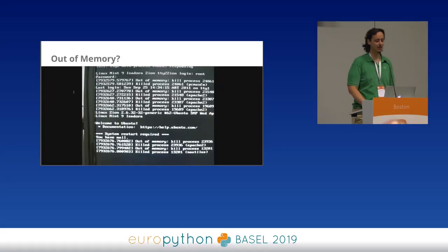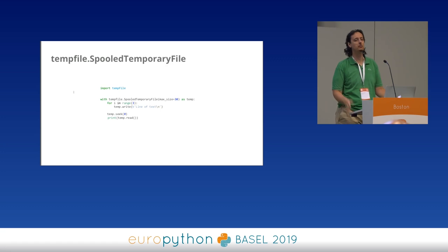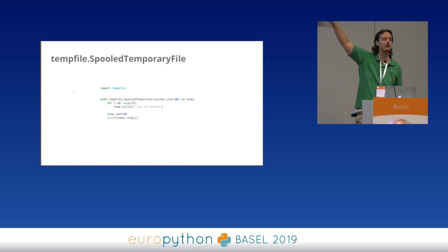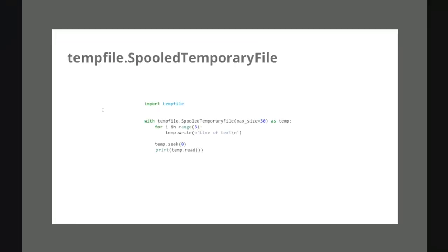The solution to this problem is available in the standard library through the SpooledTemporaryFile, which gives you the best of both worlds. As long as the file is smaller than the specified max size, Python works on it in memory — similar to BytesIO, very fast, nearly real-time. But if the file grows beyond that size, it gets swapped to disk. So you don't have to worry about users exhausting all your memory. For the 90% of realistic-sized requests, you process them quickly in memory. For big or potentially malicious requests, you offload them to disk and are just a bit slower, but you won't crash anymore.